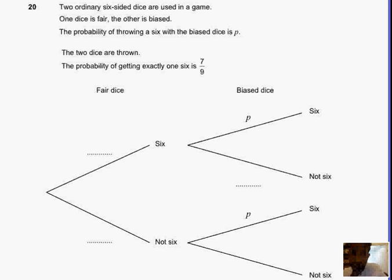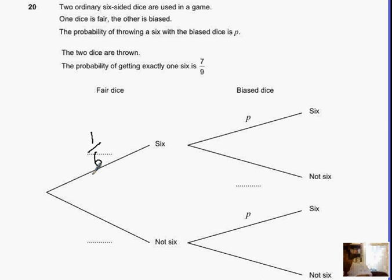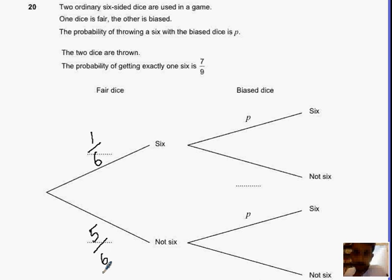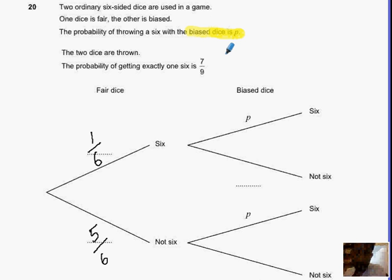We know for a fact that when we have a fair dice, the chances of getting a six is one out of six. And so the probability of not getting a six must be five out of six, because we've got five sides that can't be a six. Now let's take a look at the biased dice — if we read the question properly, it says the probability of getting a six on the biased dice is P.